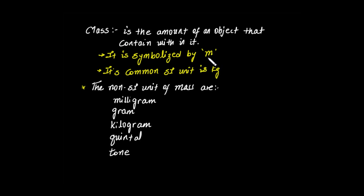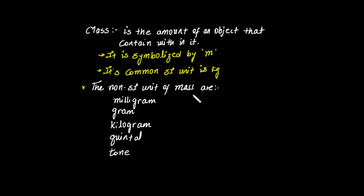The common SI unit of mass is kg — capital K, small g. The SI unit is a standard international unit widely accepted in the whole world. What are the SI units of mass? What are the other units of mass?